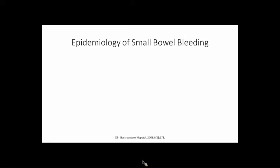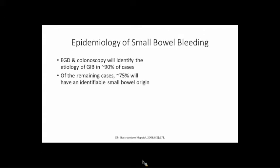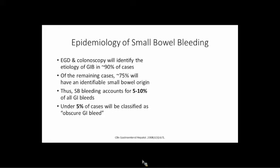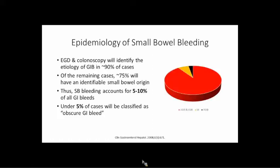In terms of epidemiology — it seems like we see it all the time at Mount Sinai, but that's because hospitals funnel these patients to us. It's actually kind of rare. EGD and colonoscopy will identify a bleeding source 90% of the time, so 90% of GI bleeds are either upper GI or colonic. That leaves about 10% for everything else. In that 10%, 75% of the time you'll find an identifiable small bowel source, and in about 5–10% you won't. So small bowel bleeding accounts for about 5–10% of GI bleeds, and around 5% are truly obscure.